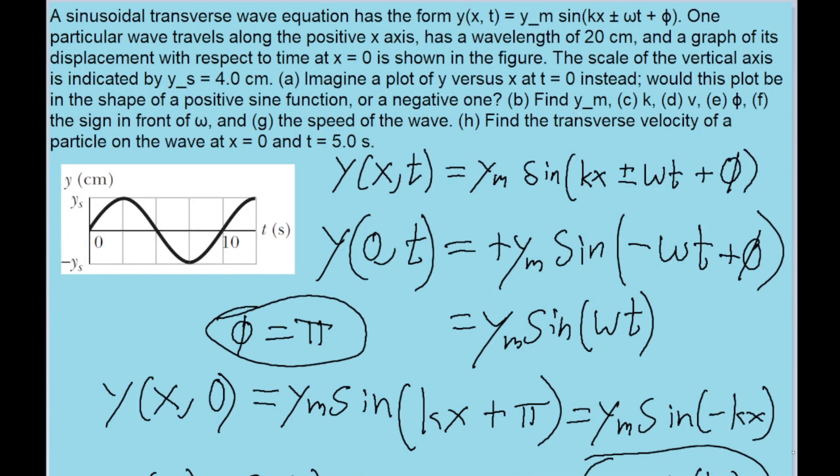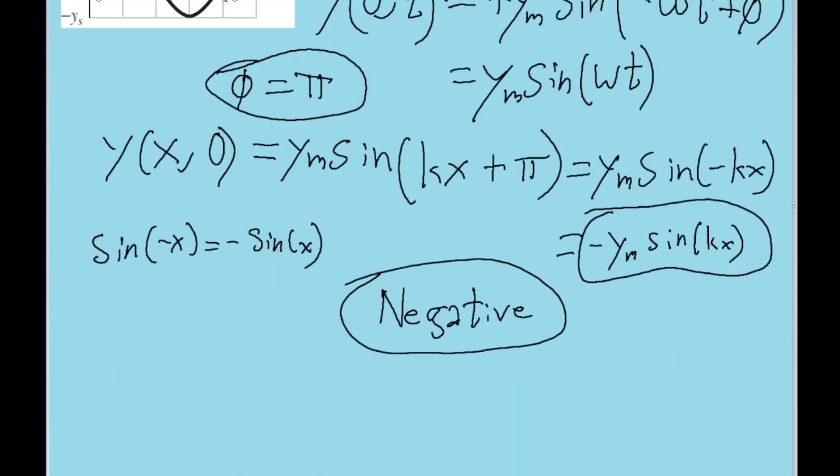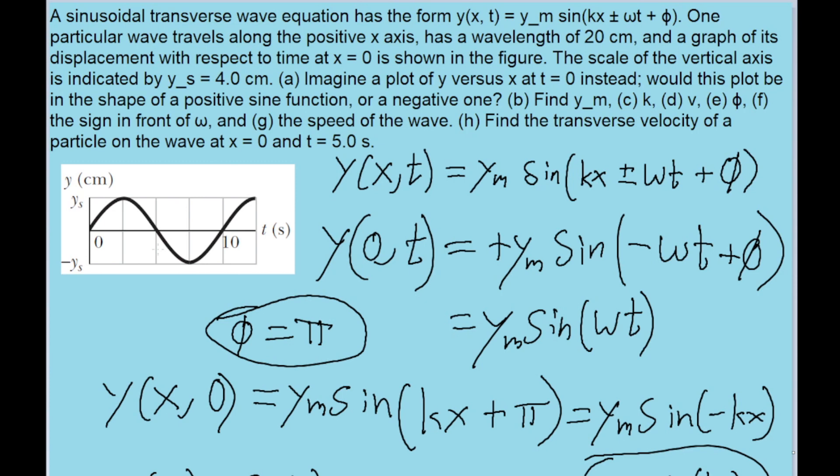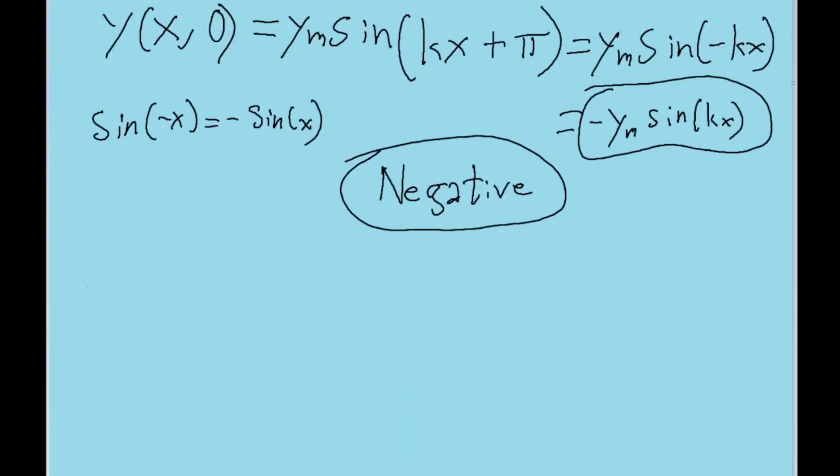Part b asks us to find y_m. In other words, it's asking us to find the amplitude of the function, which is just the point in the problem, or in the wave, that is the furthest away from its origin point. So in other words, where these maximums or where these minimums are. And that's easy, because we can see from the graph that it's just going to be where y_s is. And the problem tells us that y_s is equal to 4.0 centimeters. So the answer to part b is 4.0 centimeters for the amplitude.